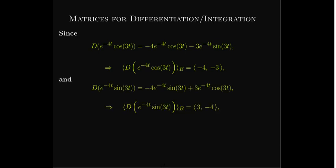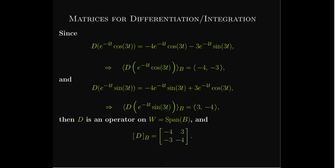Taking the derivative of e^(-4t)sin(3t), I again get a linear combination of functions in B. Written as -4e^(-4t)sin(3t) + 3e^(-4t)cos(3t), I need to put the cosine term first, giving coordinate vector (3, -4). Placing those vectors as columns gives the matrix representation of the differential operator in basis B for the span of B: first column (-4, -3), second column (3, -4).